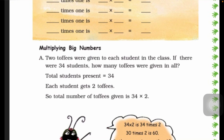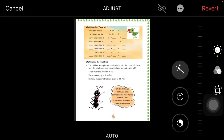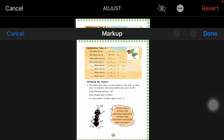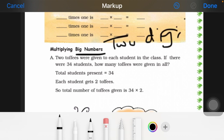First of all, tell me students — what is the meaning of big numbers? Big number means a two-digit number. A two-digit number is called a big number.